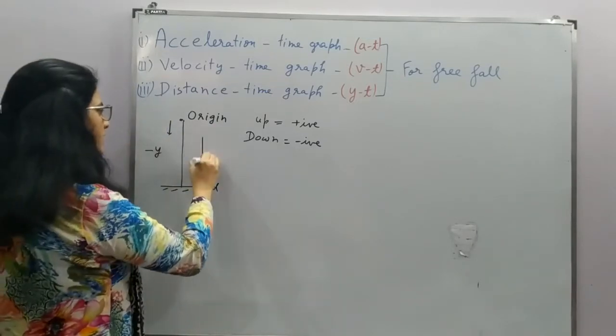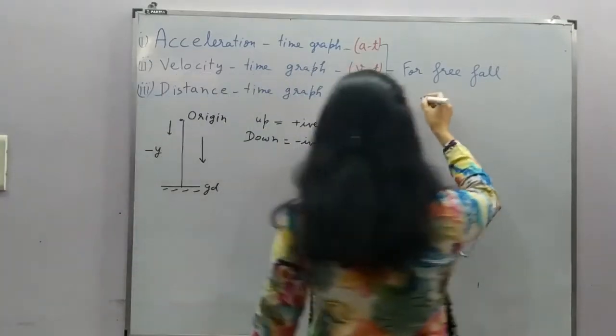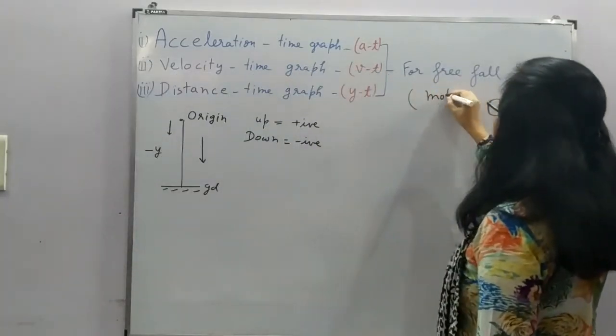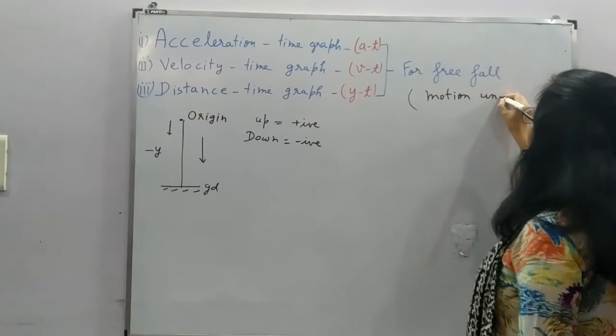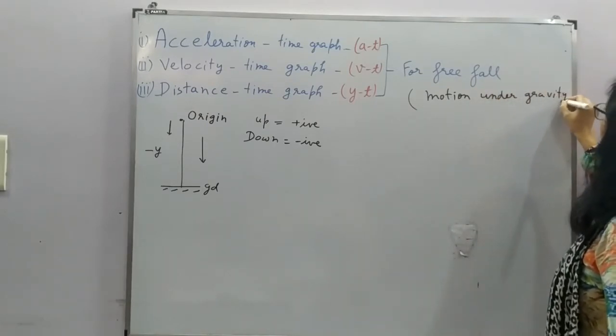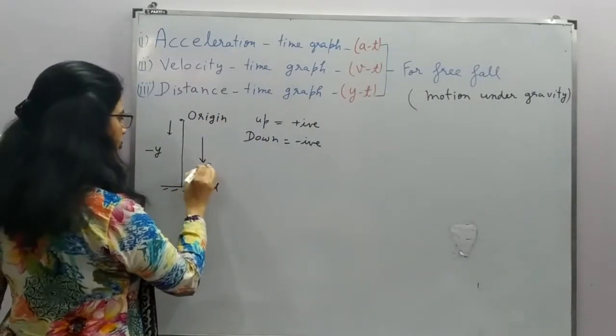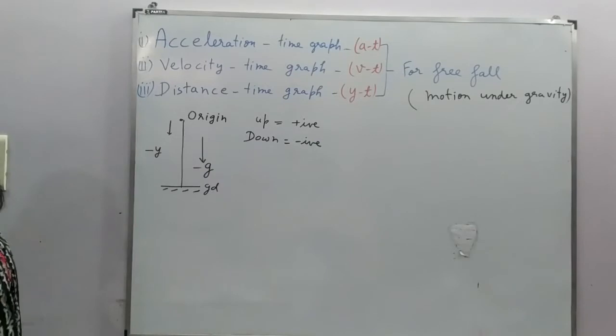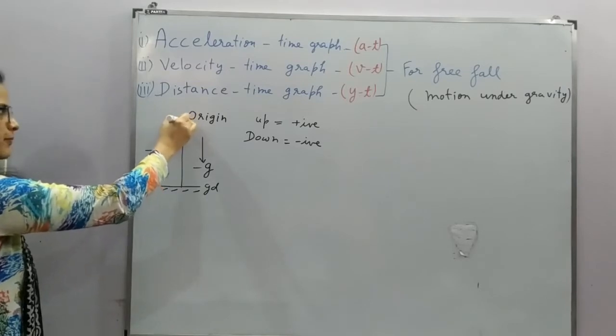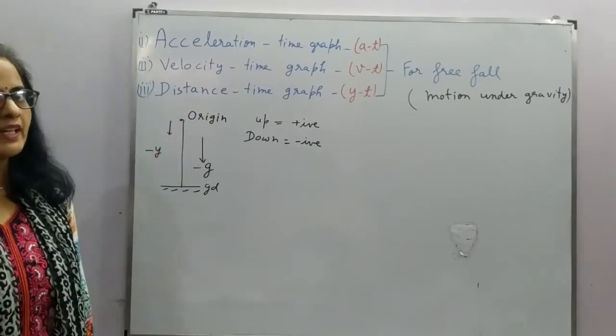And acceleration is acting in the same direction. This is a case of free fall. Free fall means motion under gravity. So here this acceleration is also acting downwards, so I am taking it minus g. So both are along the same direction. That is why when this body is dropped from this point towards the ground, the velocity of the body increases.